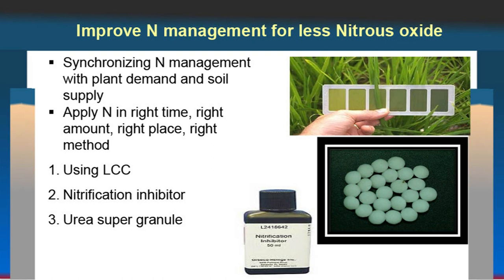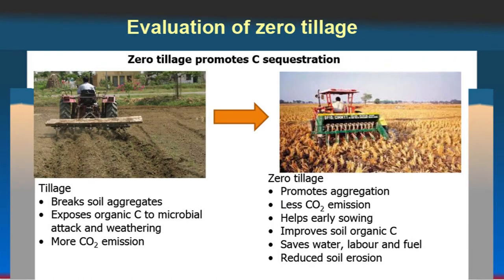Nitrogen use efficiency can be improved — which is also a resource conserving technology because you are saving nitrogen. Means to save nitrogen include synchronizing nitrogen management with plant demand and soil supply; applying nitrogen at the right time, right dose, right source and right method. Using the leaf color chart — many rice-growing farmers are aware of how to use it. Nitrification inhibitors are available in the market, and neem coated urea has been developed. Researchers are also working on new dimensions like double coating of inhibitors and renewed interest in urea super granule.